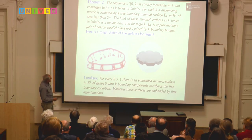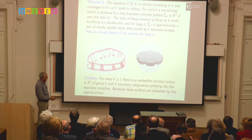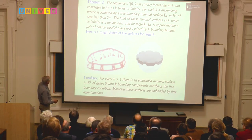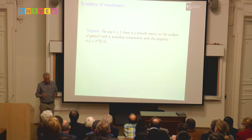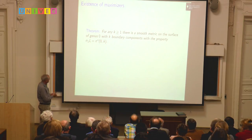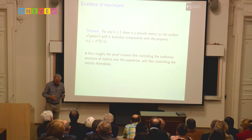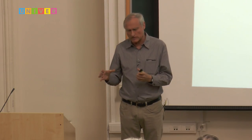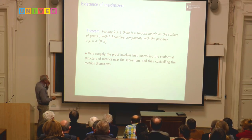The proof involves abstract methods to construct a maximizing metric for any k, proving it smooth up to the boundary, then understanding the geometry of those surfaces. For the annulus, the steps are: abstractly a maximizing metric exists; by our characterization, it is achieved by a free boundary minimal surface in the ball; embedding by first eigenfunctions gives a free boundary minimal immersion by first eigenfunctions; and then the uniqueness theorem, which characterizes free boundary minimal annuli whose coordinate functions are first eigenfunctions, shows they are also embedded with nice geometric properties.